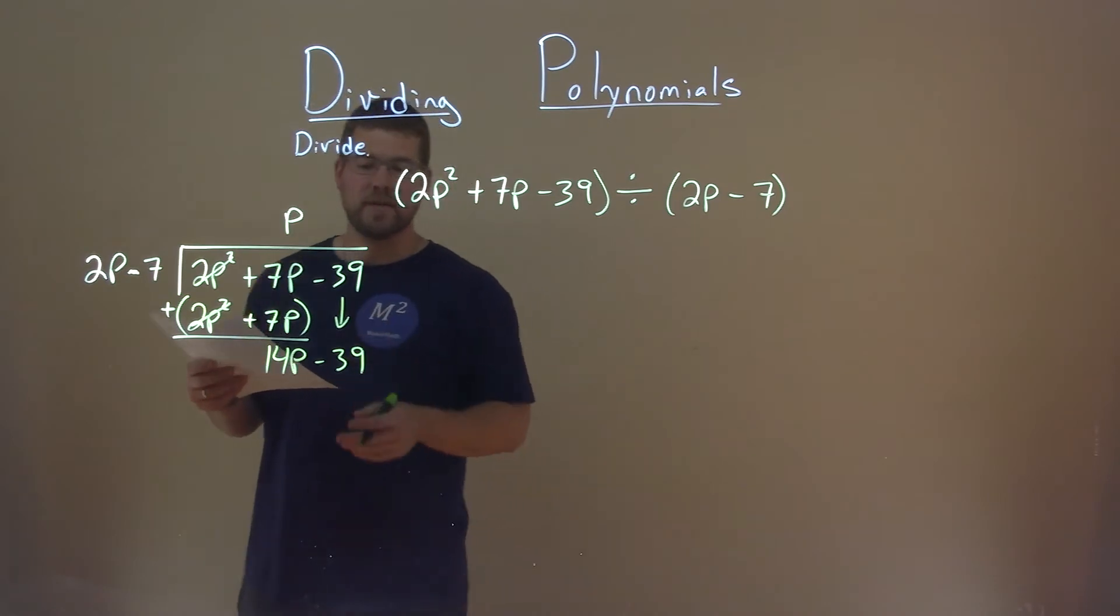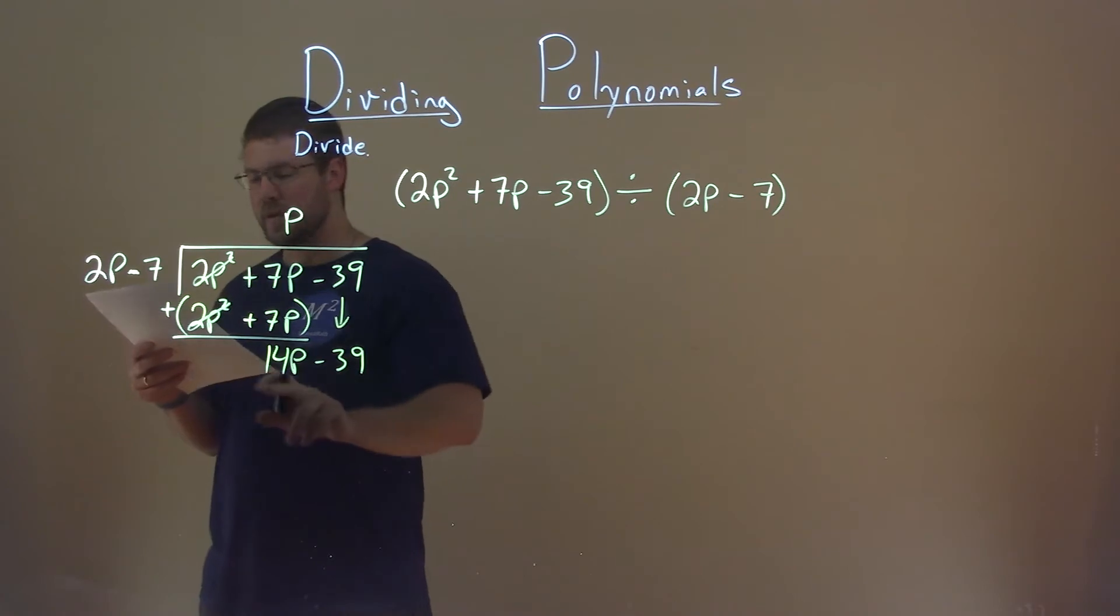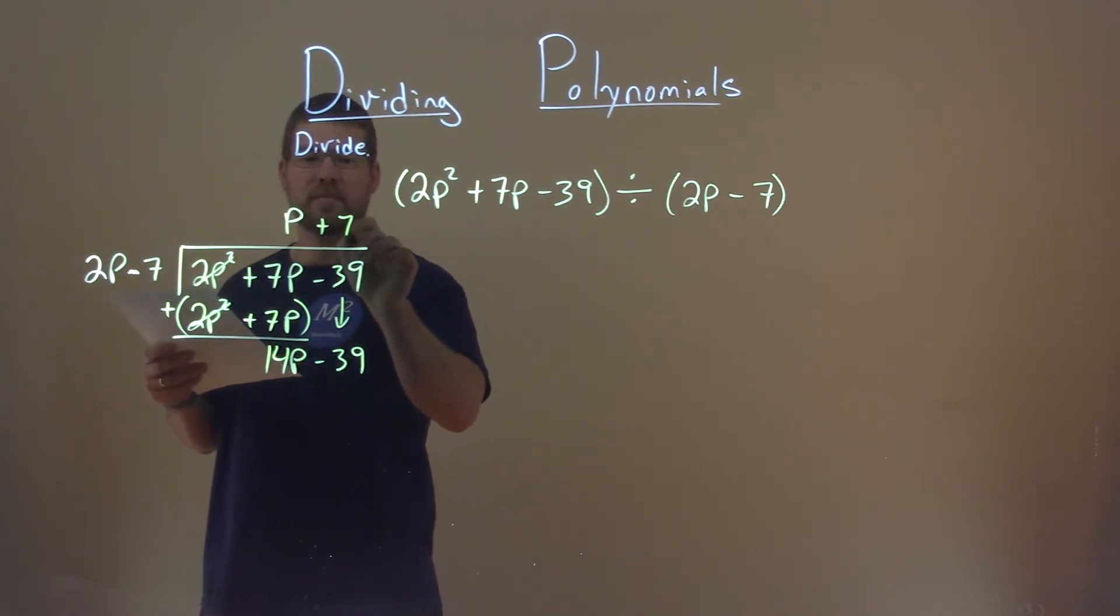Now, we have 14p minus 39, and we do the same thing. What times 2p gets me 14p? That's a 7, positive 7.